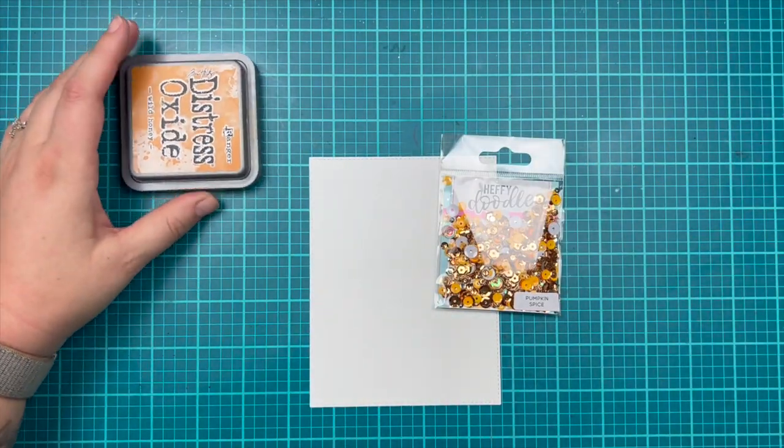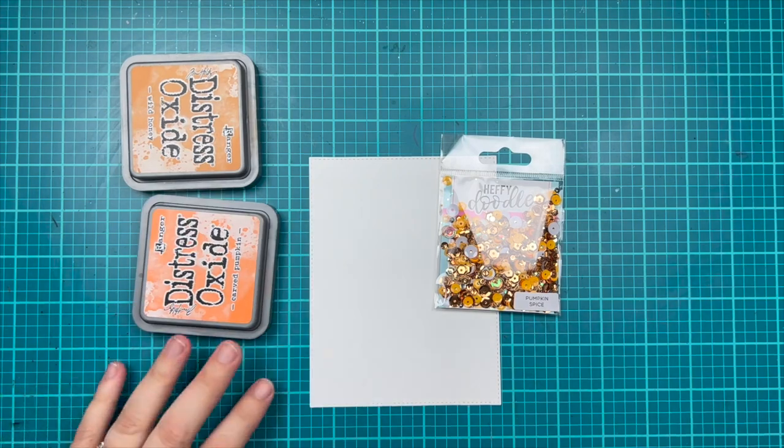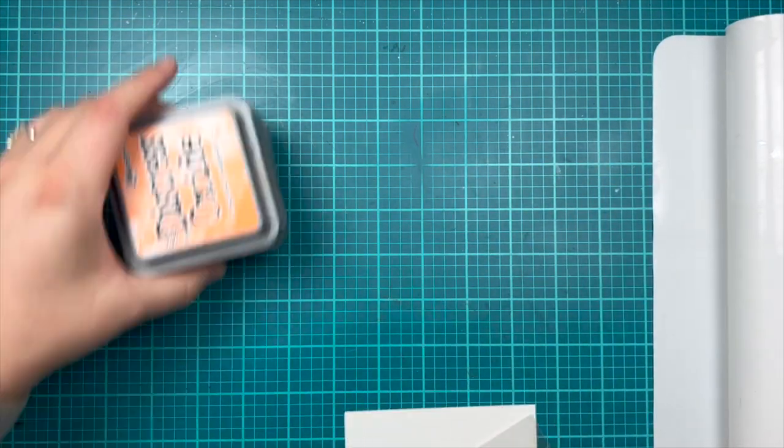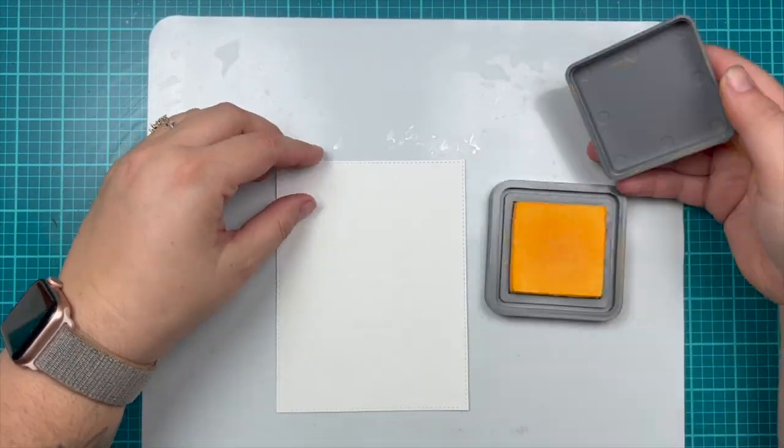Now I'm going to go through my distress oxides and pick some that I think match the pumpkin spice sparkle mix really well. So I have wild honey, carved pumpkin, and vintage photo, and I'm just going to grab a mat here to help me keep my paper and stencil in place while I do some distressing.